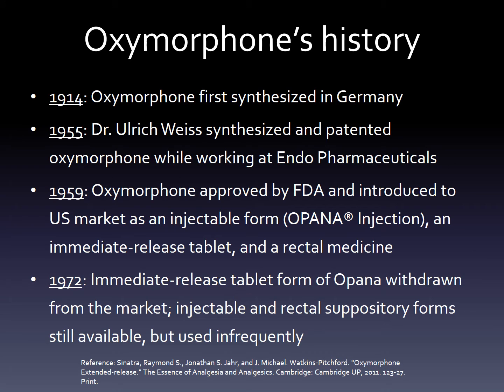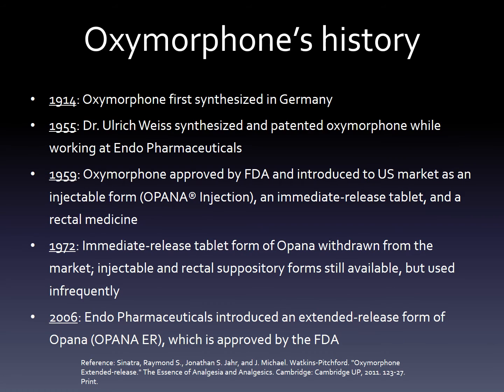A few years later, the immediate release tablet form was temporarily withdrawn from the market, likely due to high abuse. However, the injectable and rectal forms still remained on the market, though they were used less frequently. More recently, in 2006, Endo Pharmaceuticals introduced Opana ER, which is an extended release form of oxymorphone intended to treat chronic pain and have a lower abuse potential.